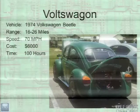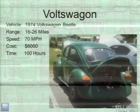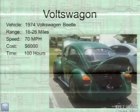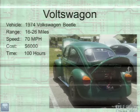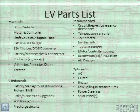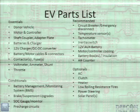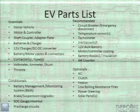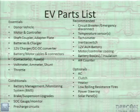This is my car — a 1974 Volkswagen Beetle. The range is originally 16 to 26 miles, top speed 70 miles per hour, conversion cost $6,000, and it took about 100 hours to get it on the road. I've probably spent at least another 100 hours on it since then working on other stuff. Here's a list of parts — the big things are the donor vehicle, motor and controller, shaft coupler and adapter plate, batteries, charger, and contactors, which are big relays, plus a bunch of other little things.